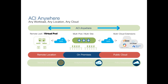Looking at the middle of the diagram, we have the single pod, and then we had the multipod and the multisite that came in. Those are all on-premise fabrics. If you wanted to extend your ACI fabric to a remote location, be it on the private side or the public side, you can do that too. On the left-hand side, you're going to see the remote locations where this ACI fabric has been extended.